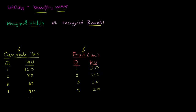If we were to list a fifth chocolate bar, my marginal utility might go to zero. Maybe a sixth chocolate bar — I have to somehow get rid of it because I'm so tired of chocolate bars, so maybe I have a negative marginal utility. And we can think about the same thing with fruit.